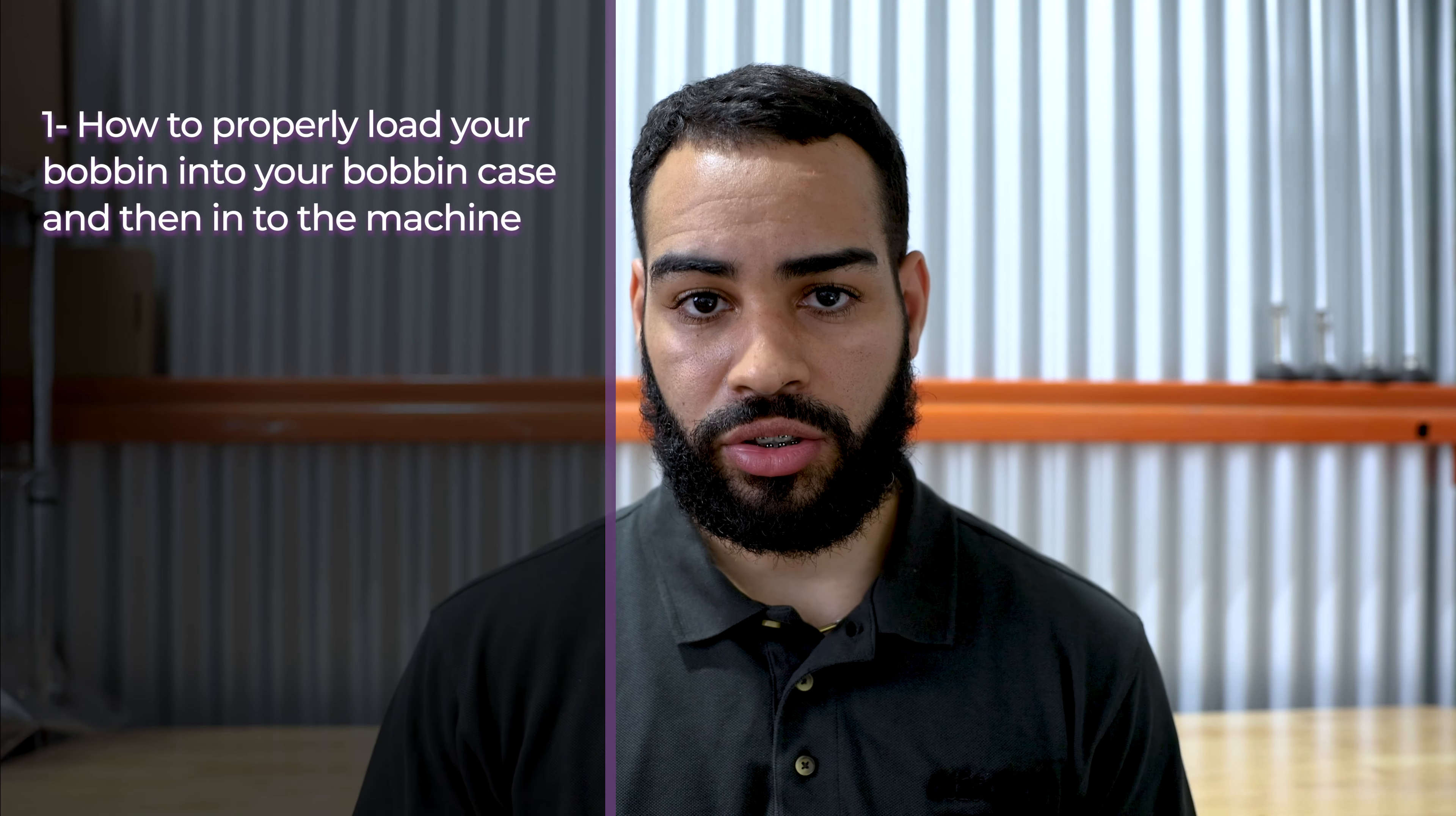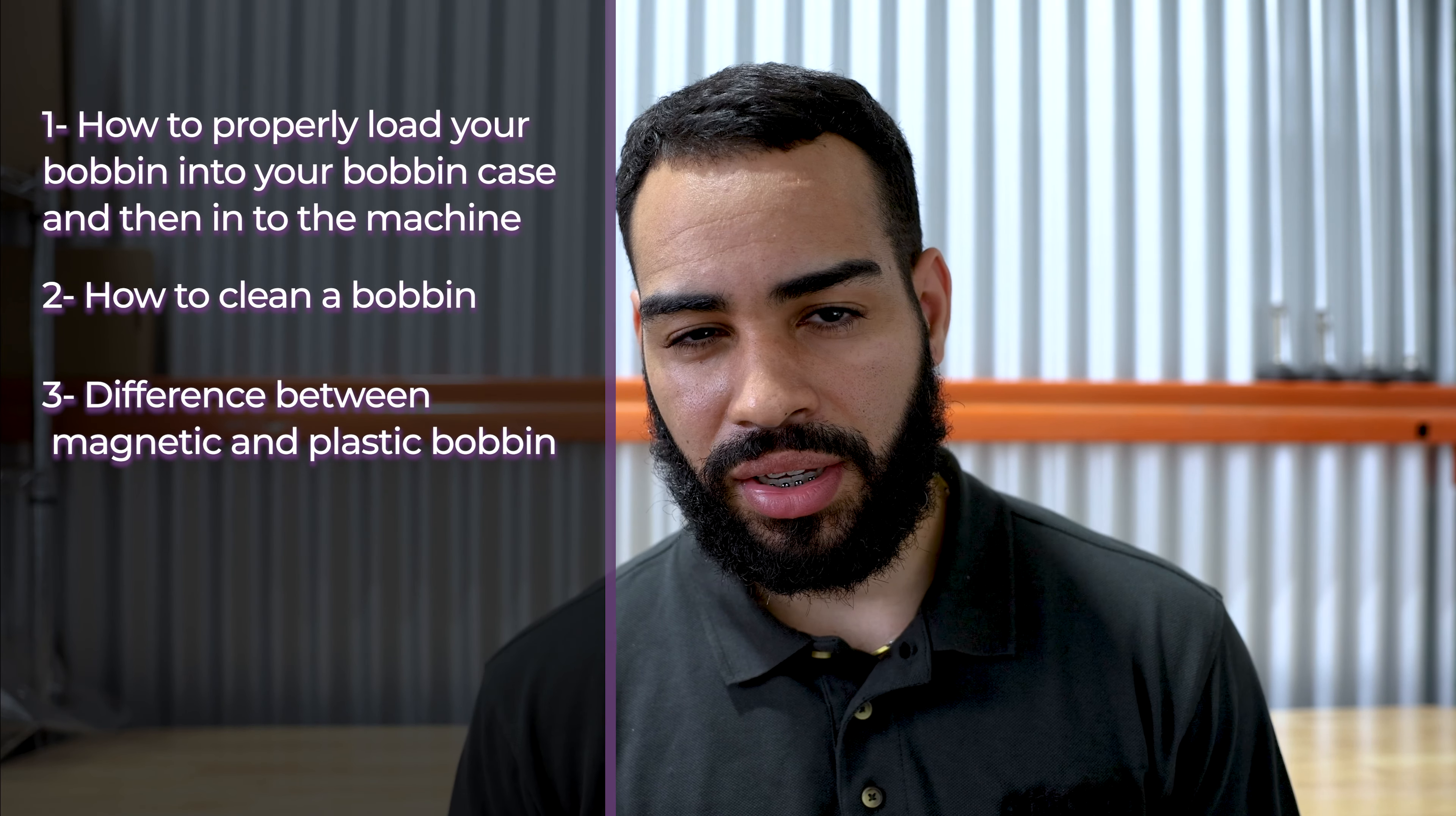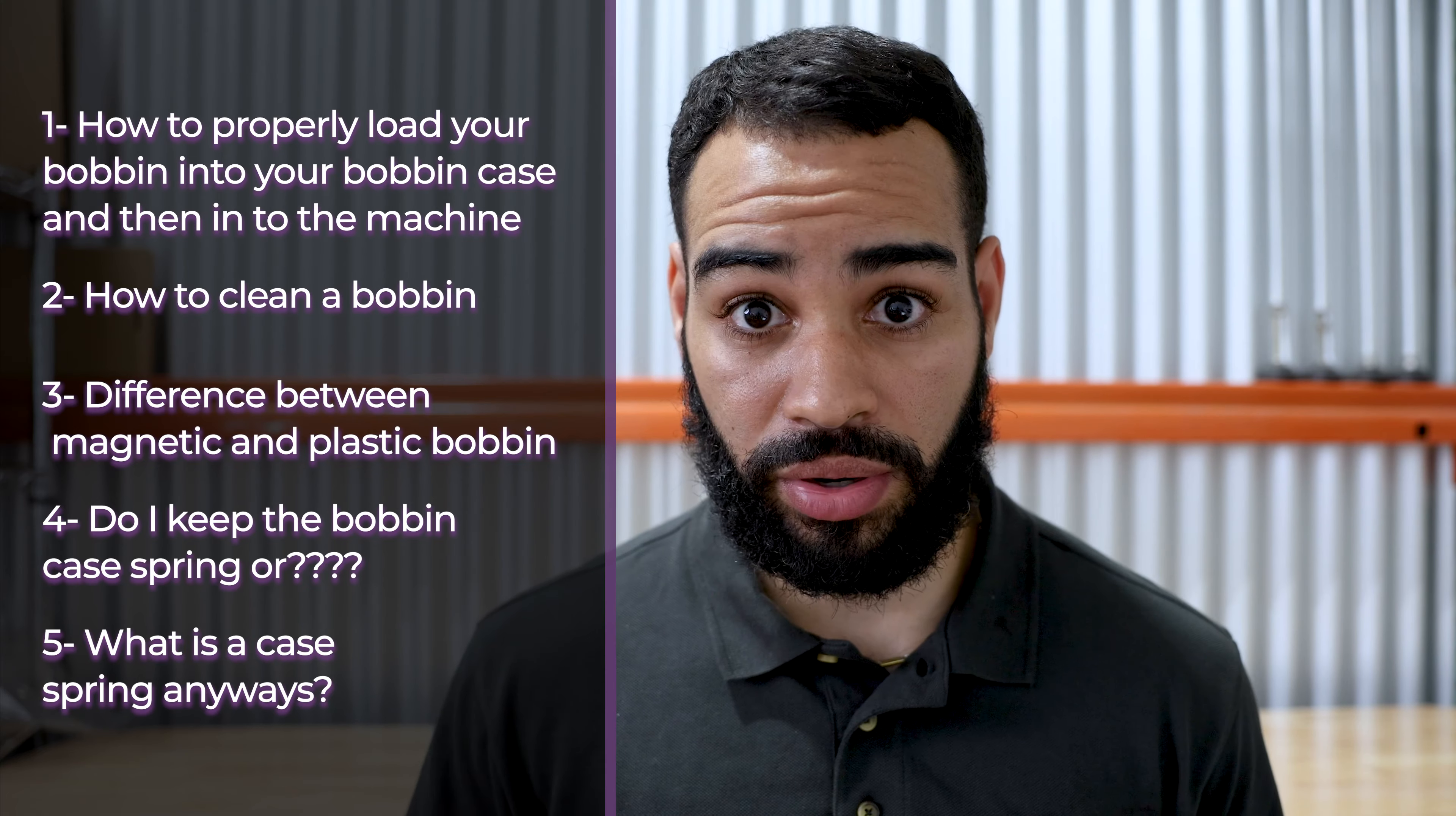Here are the five things that I'm going to be talking and demonstrating. The first one is how to lower your bobbin into the bobbin case and then into the machine. The second one is how to clean your bobbin case. The third one is what is the difference between plastic and magnetic? Fourth is do I keep the bobbin case spring or throw it out the window? And the fifth is what is a case spring anyways?